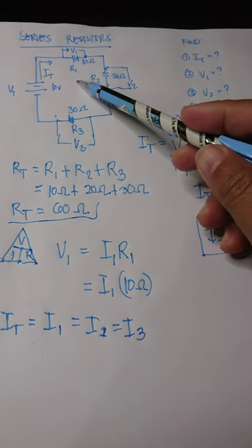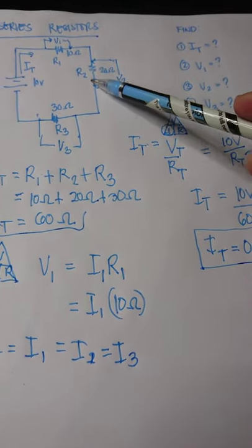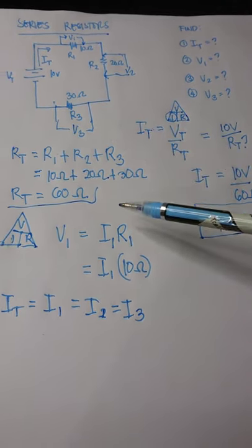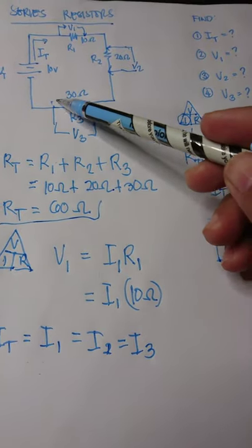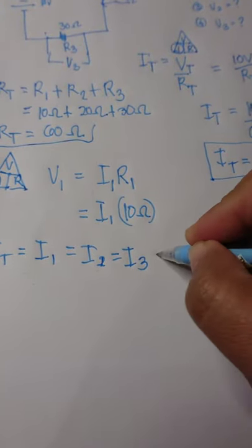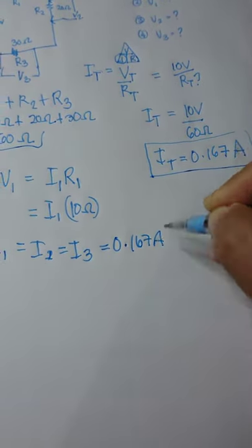which is the current flowing in R1. And it's also the same as I2, which is the current flowing at R2, and it's also the same with I3, which is the current flowing at R3. So we can say that it is equal to 0.167 ampere.